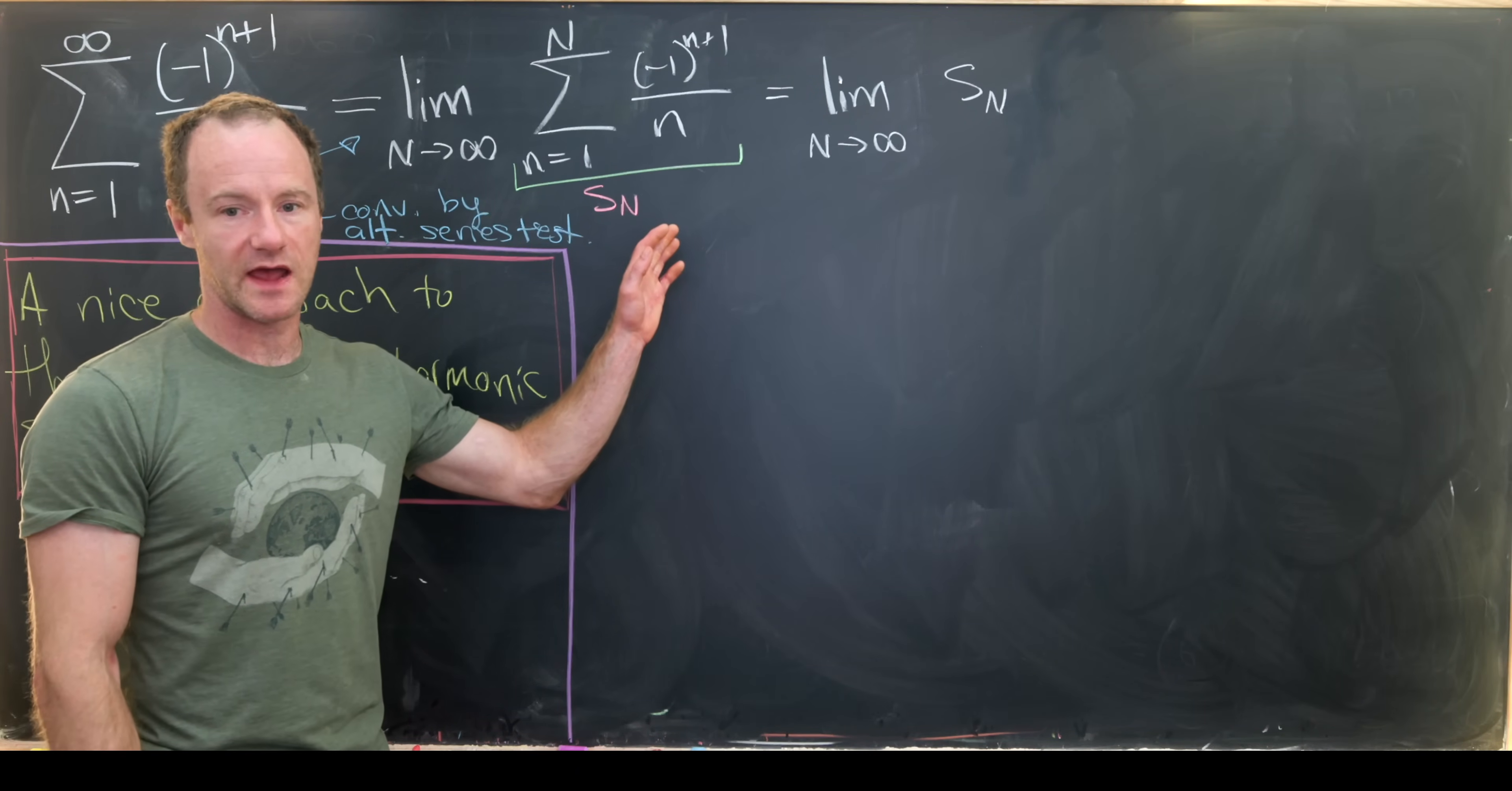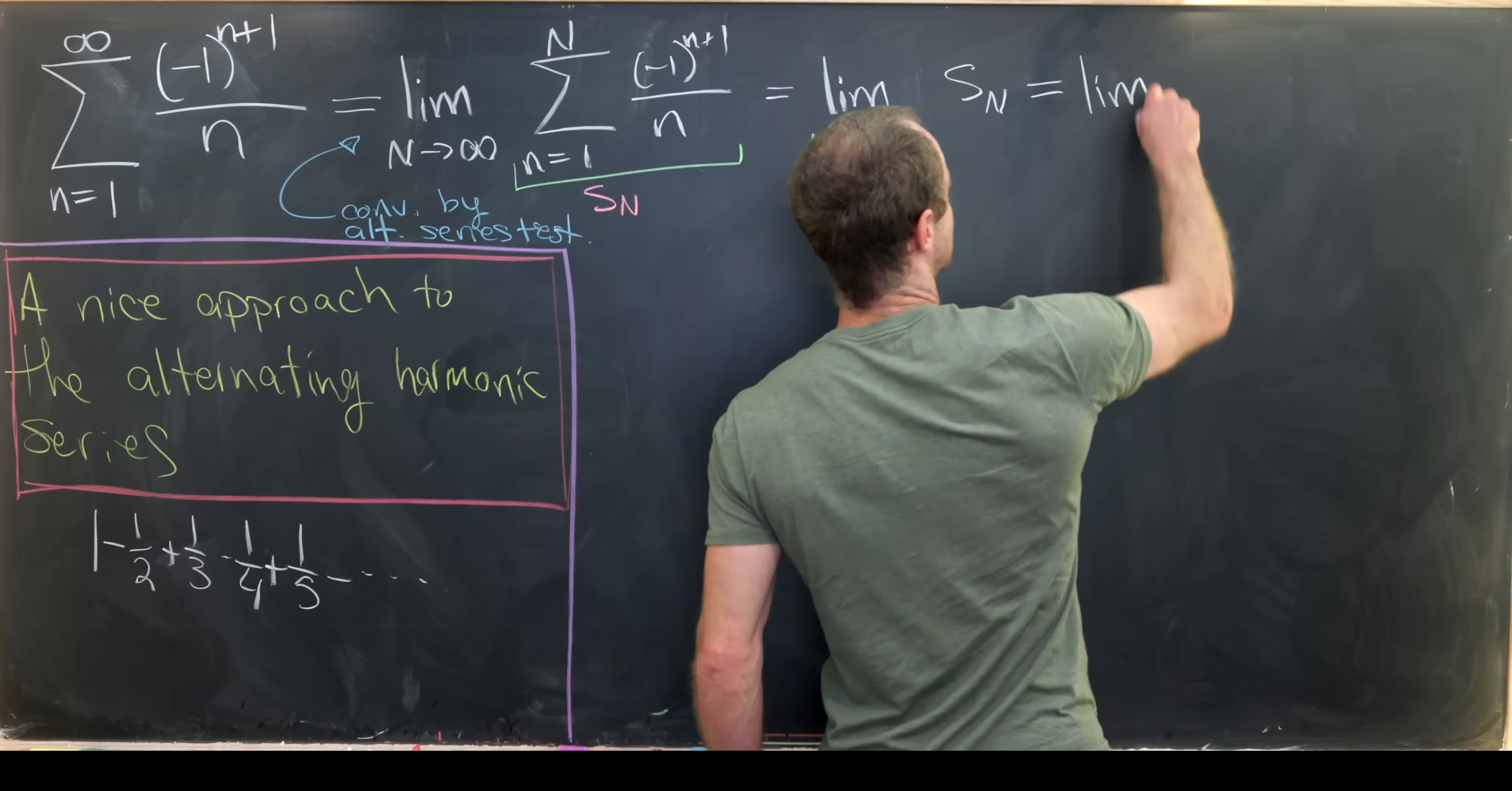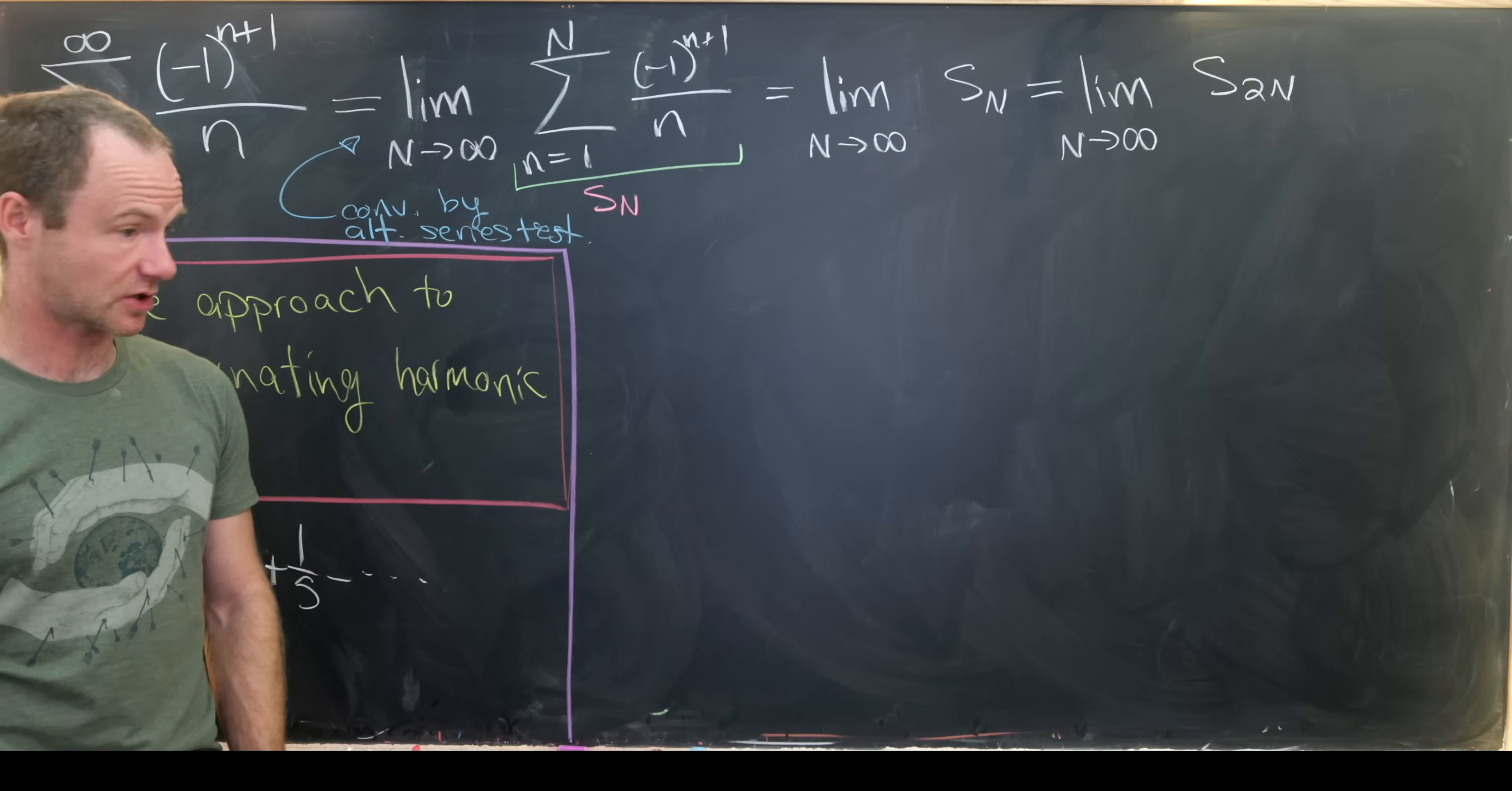But if we know a sequence converges, then any subsequence converges to the same thing. So I'll take the subsequence of even terms. So this is going to be the limit as N goes to infinity of S sub 2N. Like I said, the sequence of even terms.